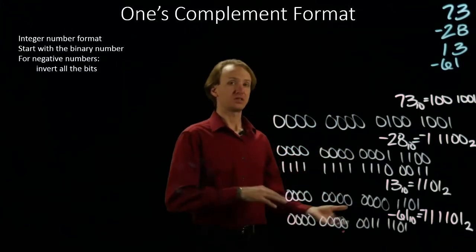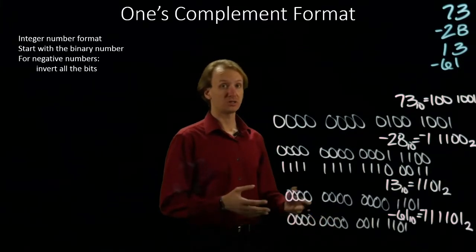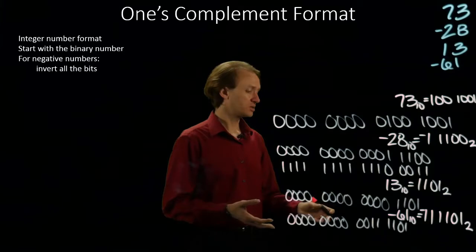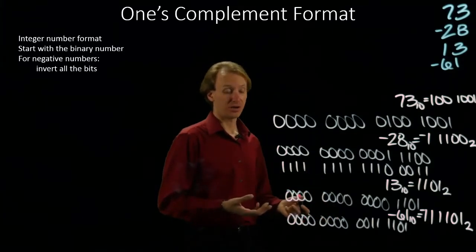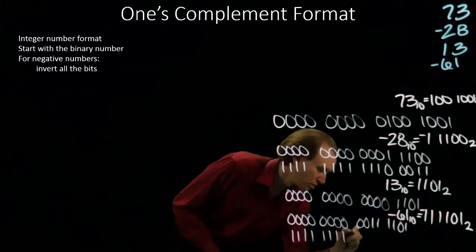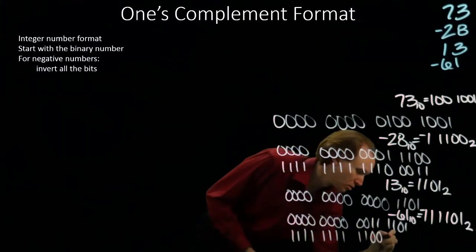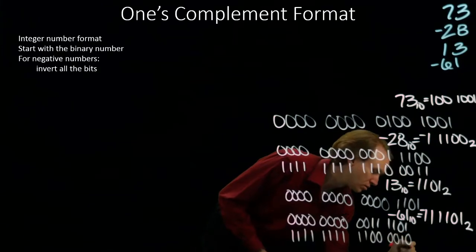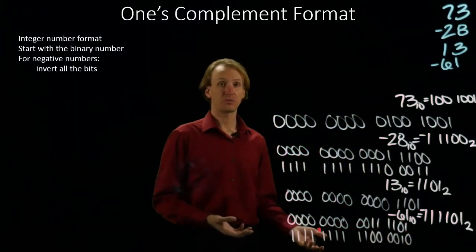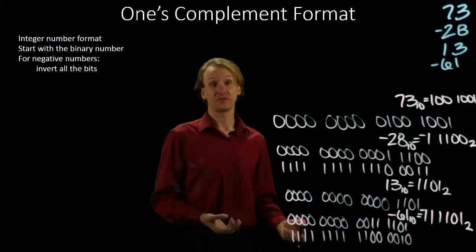But I want negative 61. So, I'm going to apply the one's complement operation to this number, or I'm going to flip all of the bits. And that will give me negative 61. So, there is my one's complement representation of negative 61.